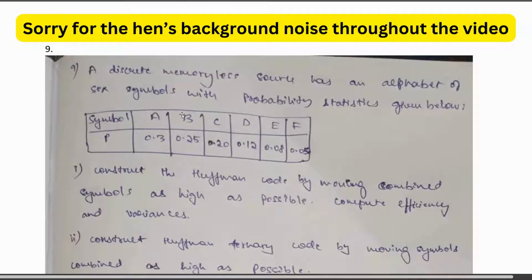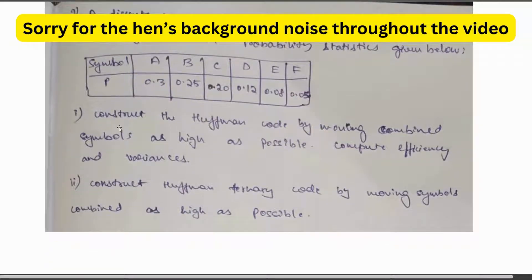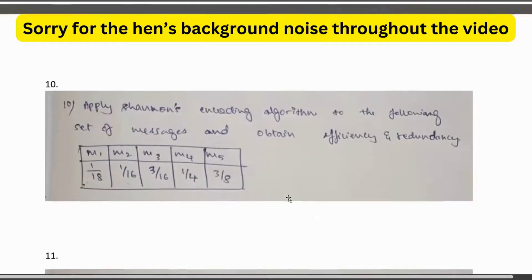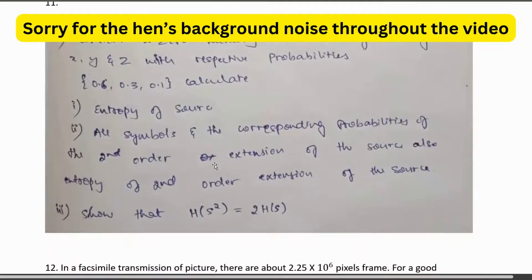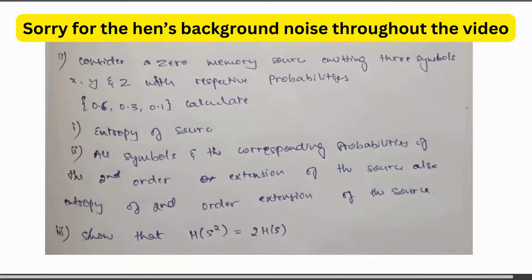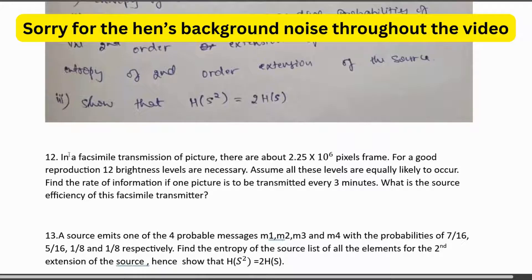Six symbols a, b, c, d, e, f are given with probabilities 0.30, 0.25, 0.20, 0.12, 0.08, 0.05. Construct the Huffman code moving as high as possible, compute efficiency and variance, and also construct a Huffman ternary code moving as high as possible. Apply Shannon's encoding algorithm and obtain efficiency and redundancy. Also, consider a zero-memory source emitting three symbols x, y, z with probabilities 0.6, 0.2, 0.1; calculate entropy and show that H(S²) = 2·H(S).